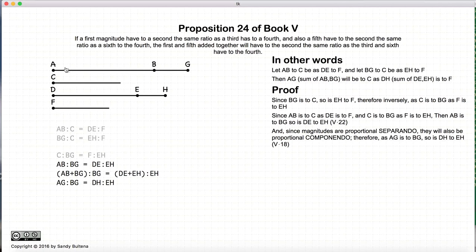Now we have that AB to BG is equal to DE to EH, and if we go by Proposition 18, which talks about magnitudes being compendo and separando and all that other stuff, basically if AB to BG is equal to DE to EH, then the entire line AG to BG will be equal to DH to EH.